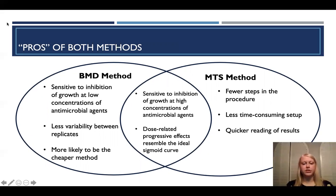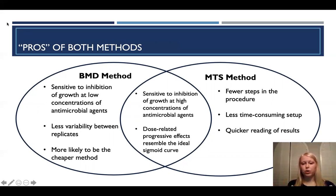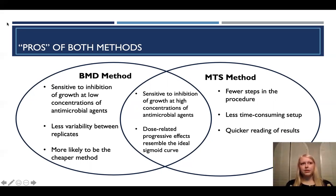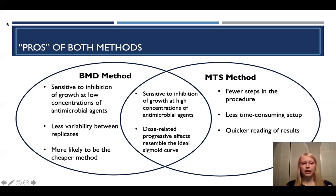To wrap up: both methods had great dose response curves showing a dose-related progressive effect, and both were sensitive to inhibition of growth at high concentrations of antimicrobial agents. However, the BMD method was much more sensitive at low concentrations and had less variability between replicates. It is also most likely a cheaper method than buying MTS strips. The MTS method had pros as well — fewer steps, less time consuming, and quicker results — which is why it is great in clinics and hospitals when you need to quickly determine the lowest dose to treat an infection. If you need to study the effects of low concentrations of antimicrobial agents in an educational or research environment, the BMD method may be the best path.